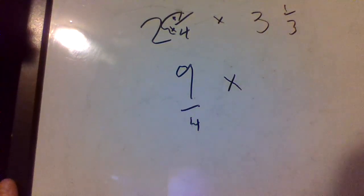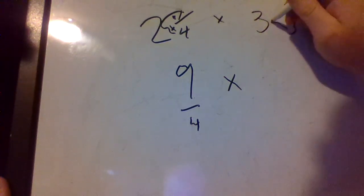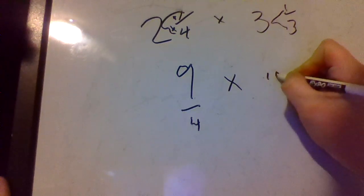Now we do the same thing over here. Three times three is nine, nine plus one is ten. Ten over three.